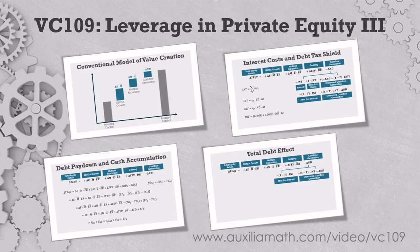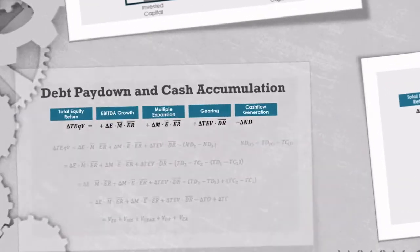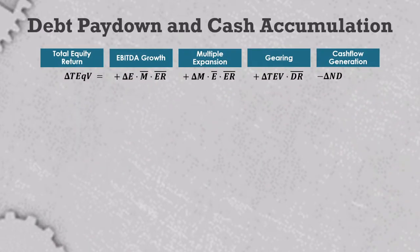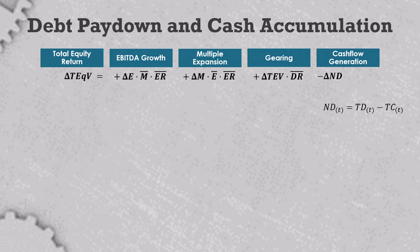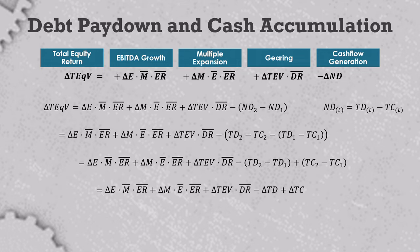The good news is that these models allow you to measure it precisely and consistently, so at least there's no ambiguity about what the impact actually is. With these philosophical musings behind us, we can now squeeze a couple more value drivers out of that cash flow generation term. Let's say that you want to separate how much of the return came from paying down debt versus accumulating cash. That's quite easy. At any time T, we can define net debt as total debt minus total cash, or TD minus TC.